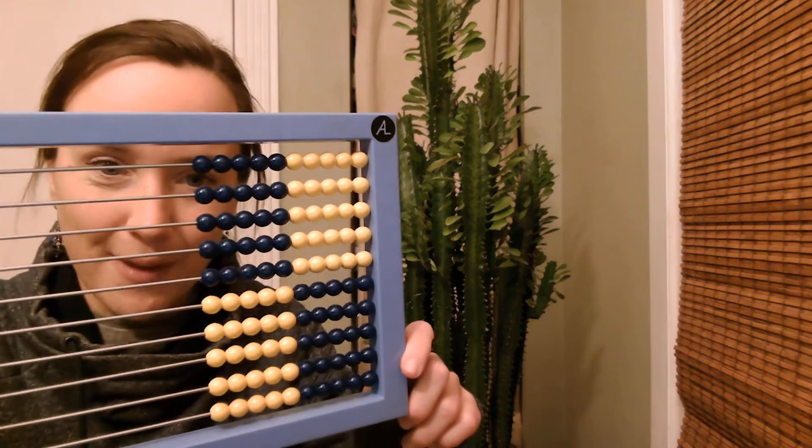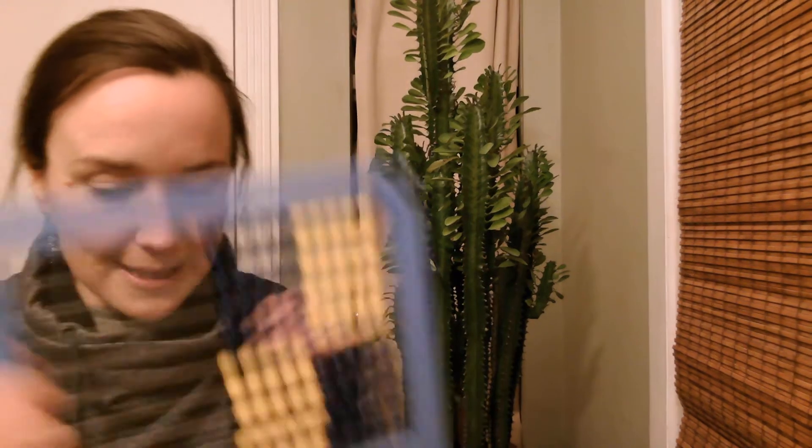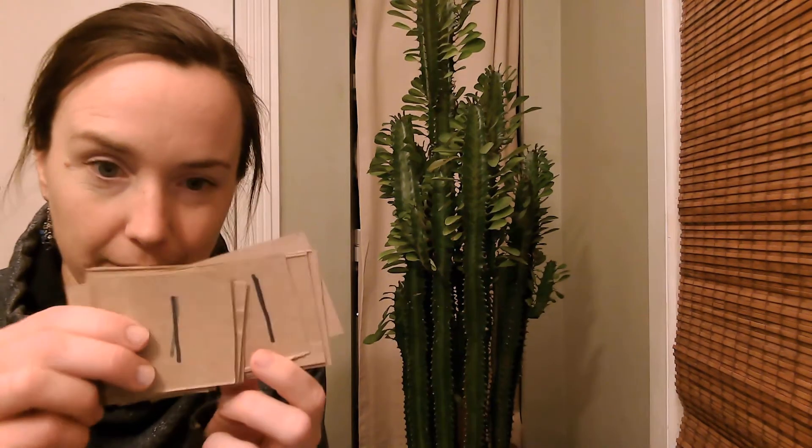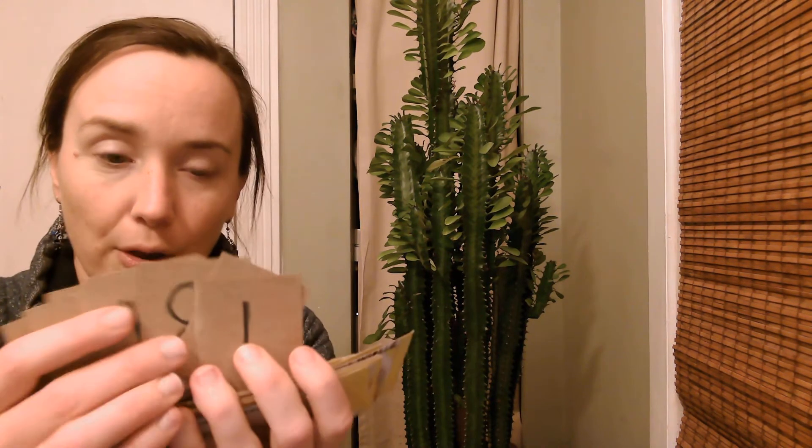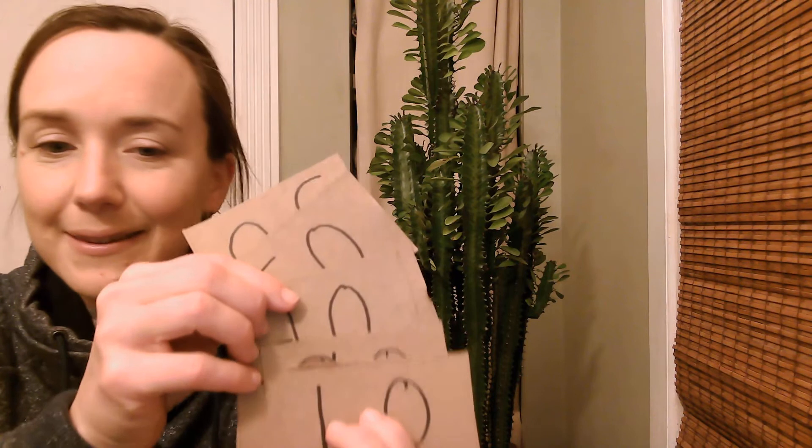We will use our abacus and you will want place value cards for ones and tens. Now, I have my super fancy ones. Are they fancy? No. I made them out of a cereal box back when the pandemic first started and we were suddenly at home. So, if you have yours in your little box, that's great, but if you ever need to make your own, that's fine too. I have all the ones here and then all of the tens here.